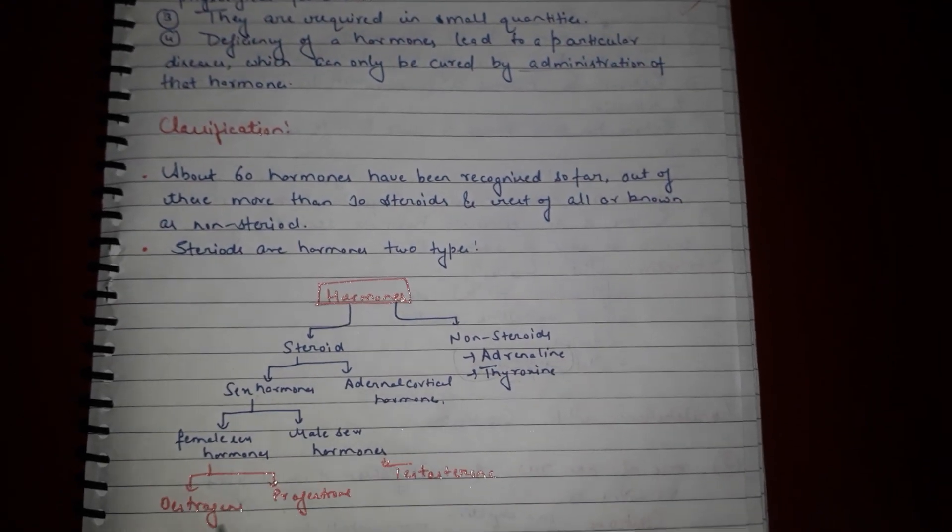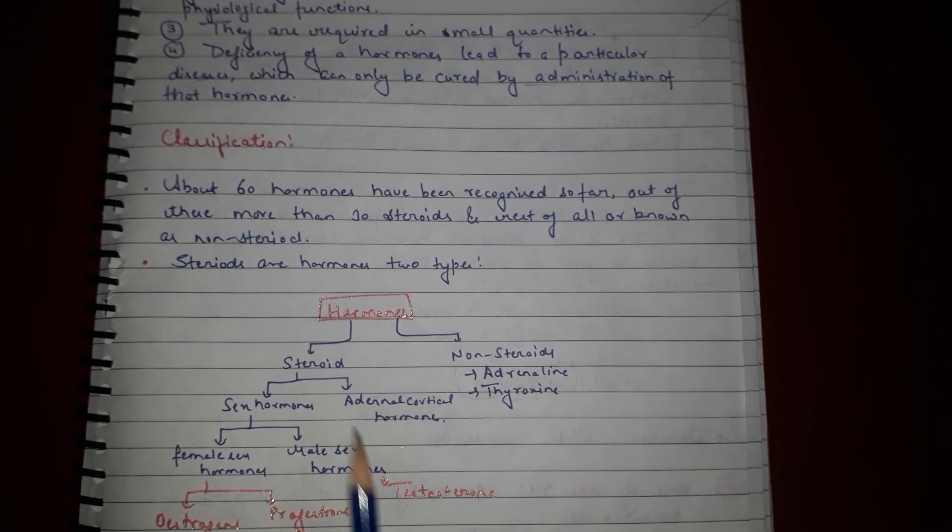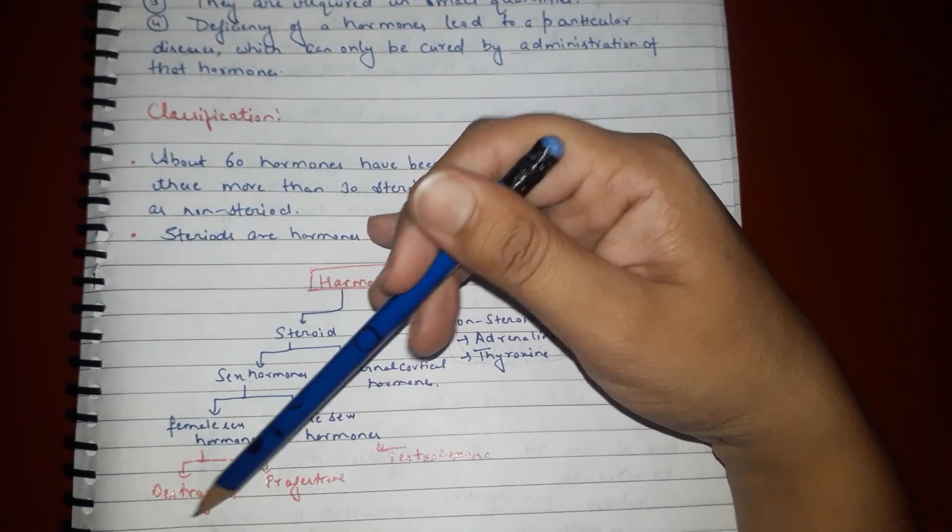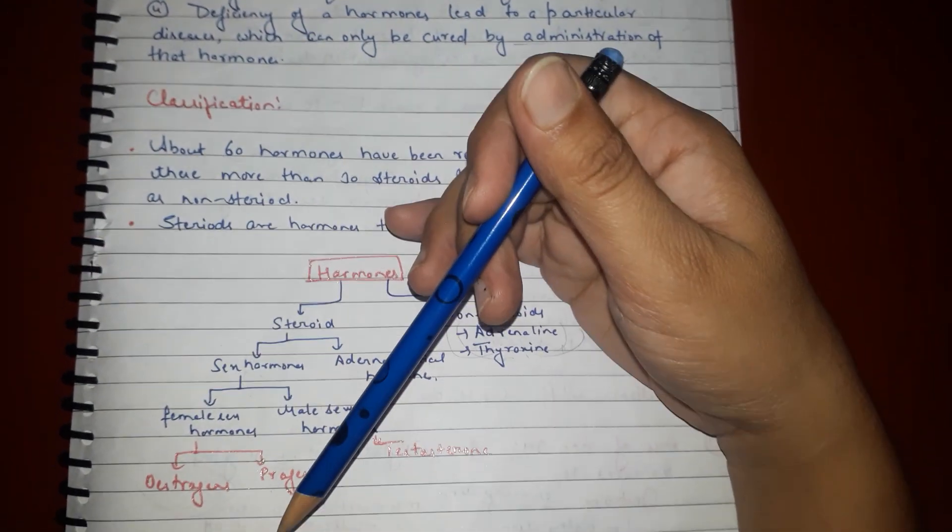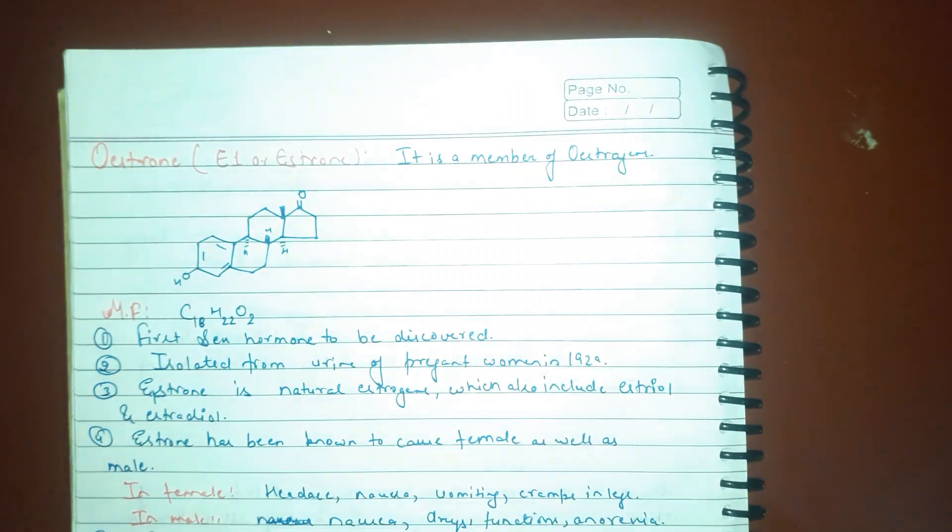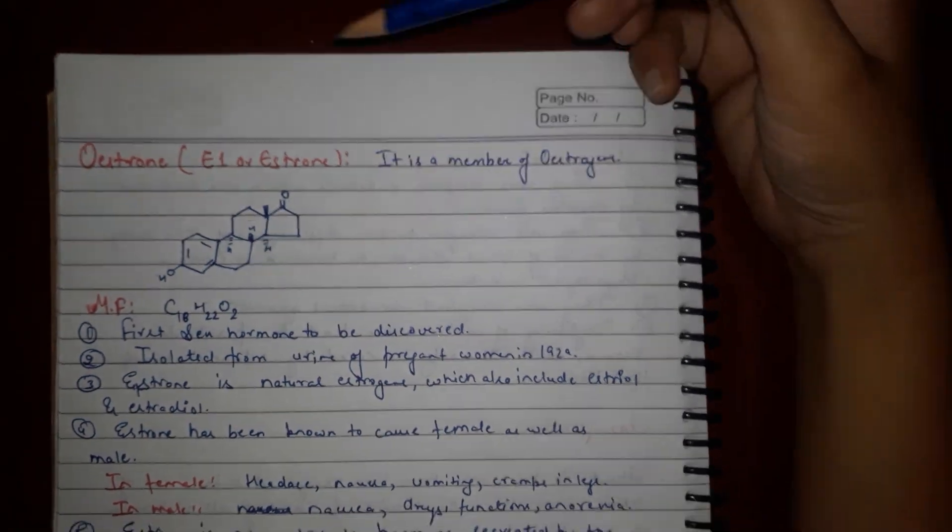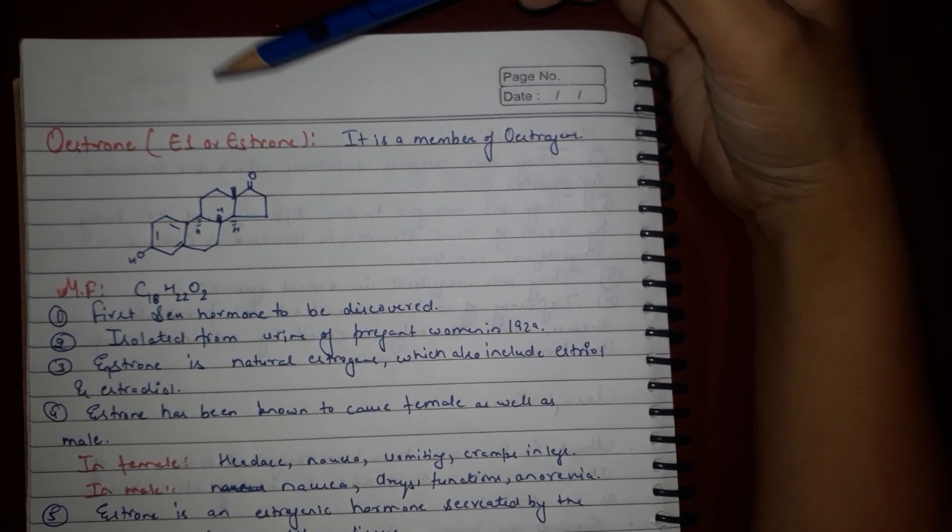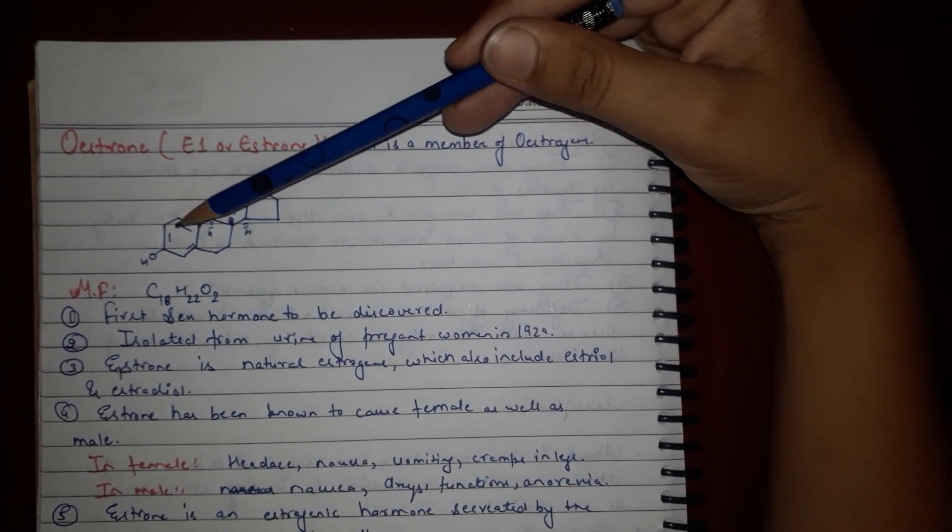In this chapter we will discuss estrogen, progesterone, and testosterone in steroids, and non-steroids adrenaline and thyroxine. First in this video I will discuss estrogen. Estrogen, or estrone, is a member of the estrogens.